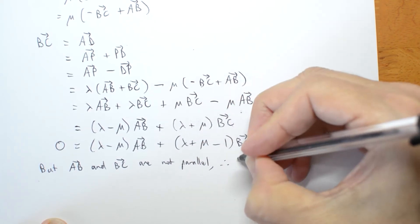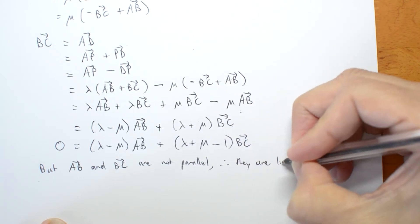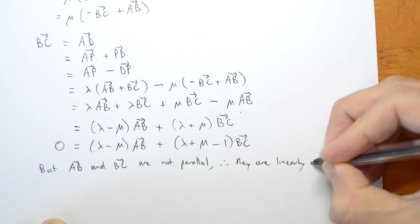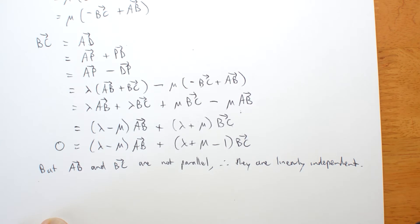But AB and BC are not parallel. Therefore, they must be linearly independent.